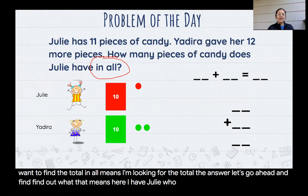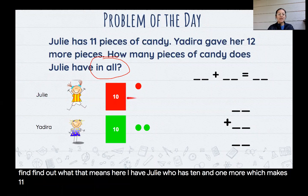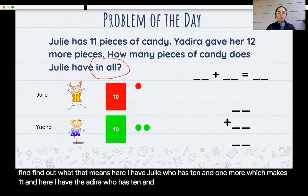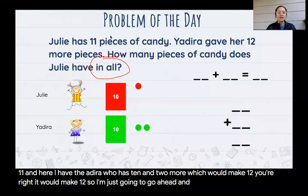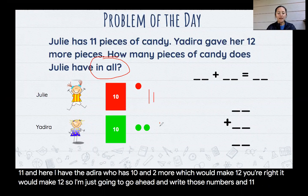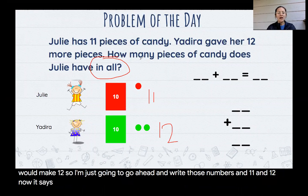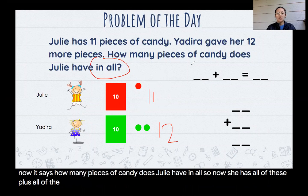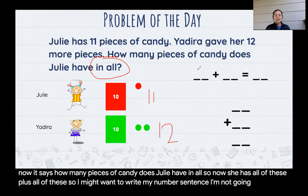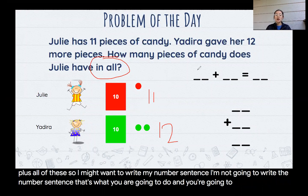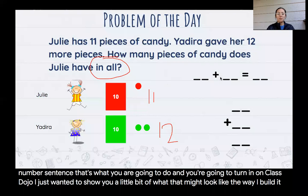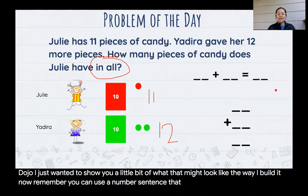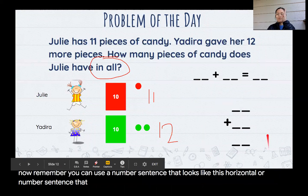Here I have Julie who has 10 and one more, which makes 11. And here I have Yadira who has 10 and two more, which would make 12. You're just going to go ahead and write those numbers in: 11 and 12. Now it says how many pieces of candy does Julie have in all? So now she has all of these plus all of these. So I might want to write my number sentence. I'm not going to write the number sentence. That's what you are going to do.